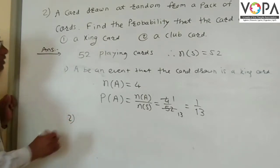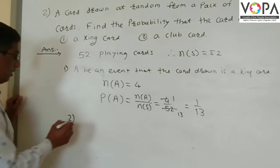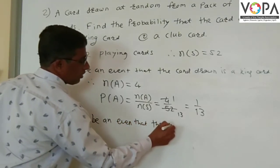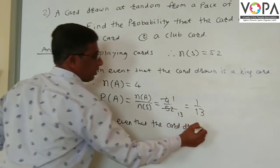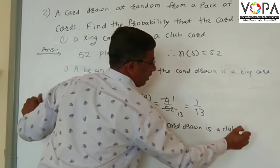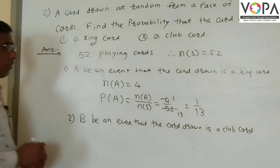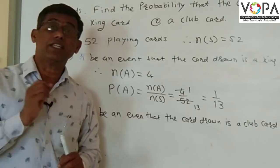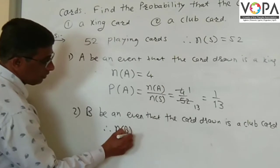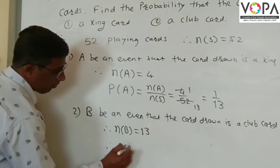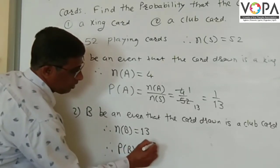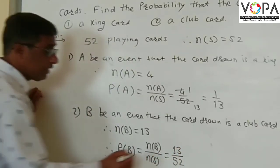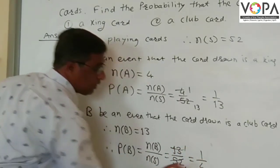Now, we take the second part. The card drawn is a club card. Let B be an event that the card drawn is a club card. There are 4 suits: Club, Spade, Heart, and Diamond. Each suit contains 13 cards. Therefore, N of B is equal to 13. Therefore, probability of B is equal to N of B upon N of S, which is 13 upon 52. This equals 1 upon 4, which is the probability of B.